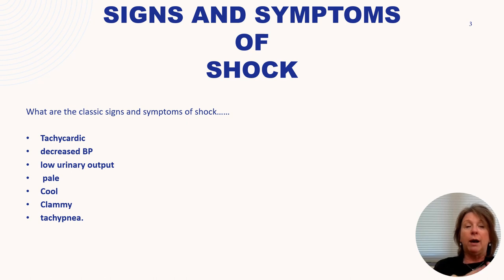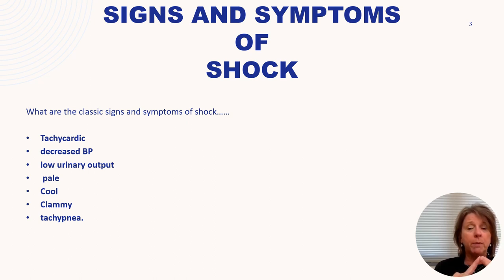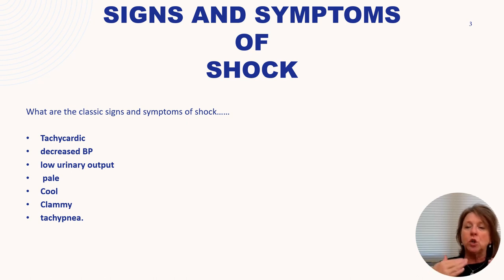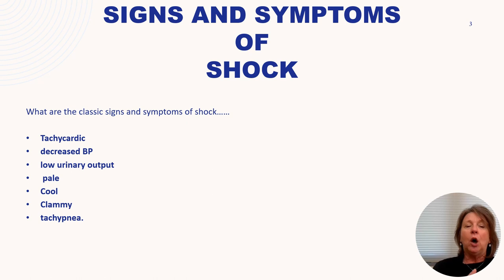Blood is taken from the kidneys so urinary output drops — it's called survival. We'll be pale because we're not oxygenating, cool and clammy because everything is shunting down. We'll be tachypneic — breathing faster to try to oxygenate. Classic signs of shock are: tachypneic, tachycardic, hypotensive, oliguric, pale, cool, and clammy.